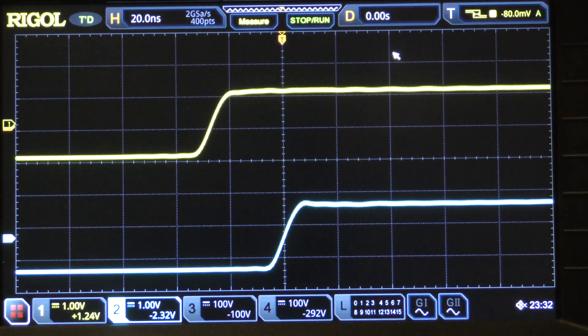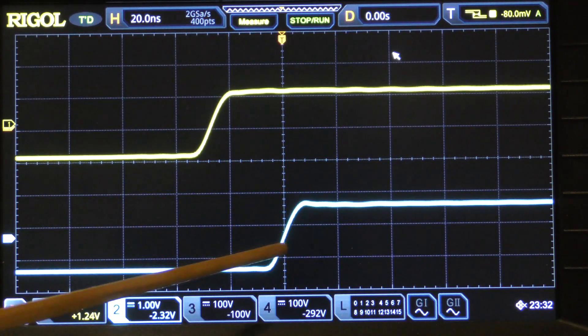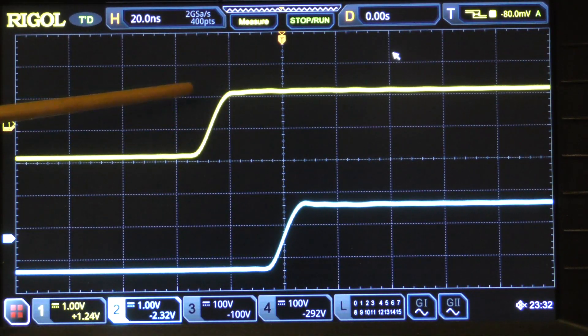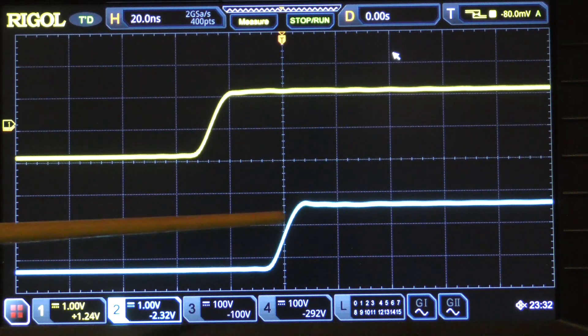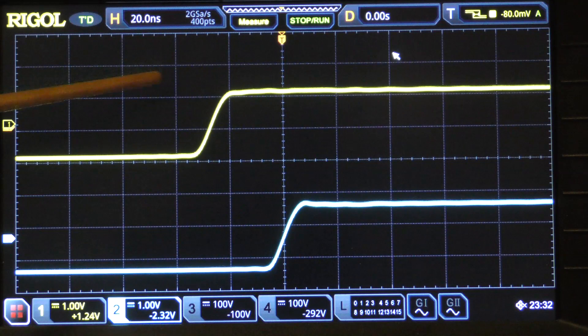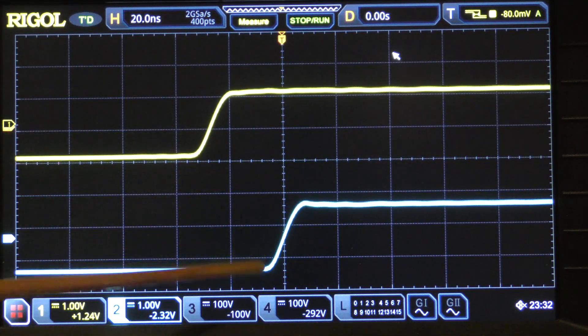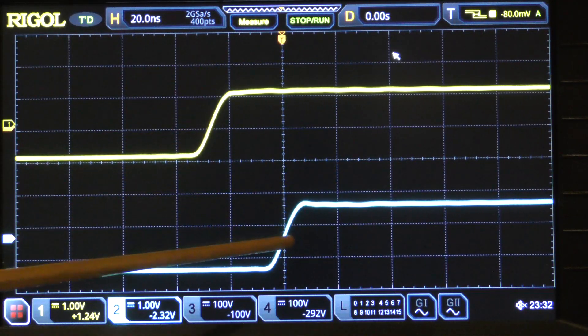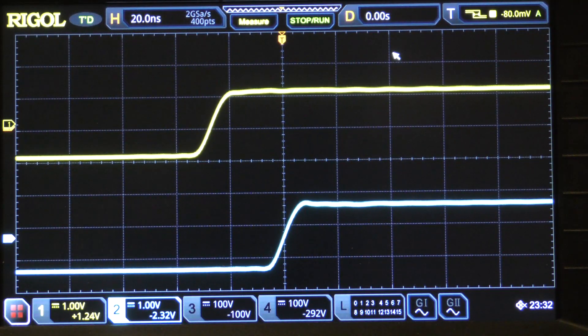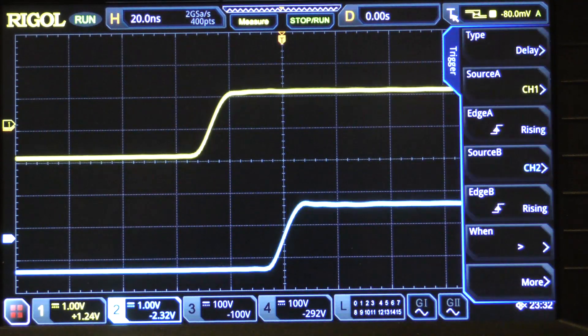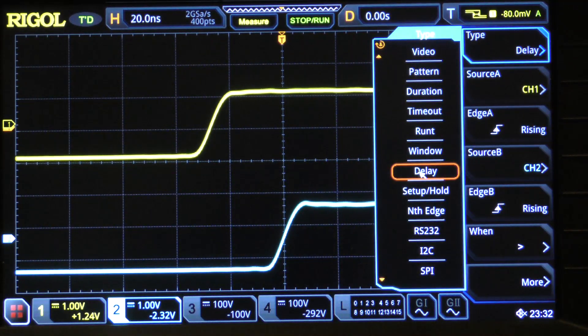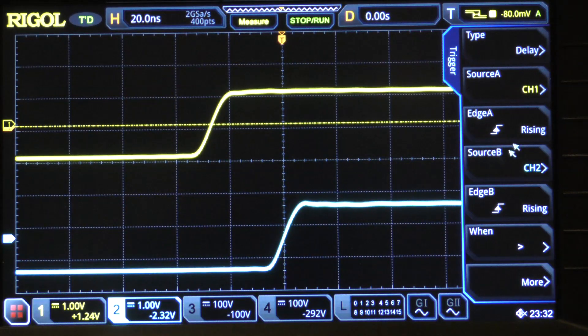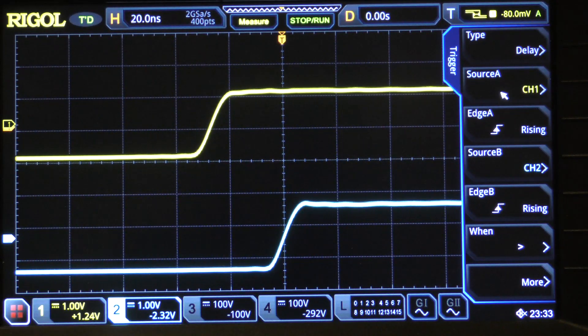So, how do we set up an MSO5000 to trigger on this delay difference? Well, you connect one channel to one of the signals you're looking for and a second channel to the second signal. Then you have to decide, do I want to look for situations where this occurs after this or cases where this occurs before? And the delay trigger can look for both. The way we set up the delay trigger is you bring up the trigger menu. You then select the type, which in this case is delay. You select source A. In this case, we're using channel 1 for source A, and source B is channel 2.